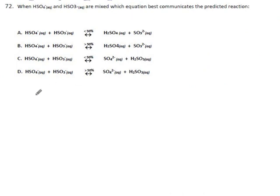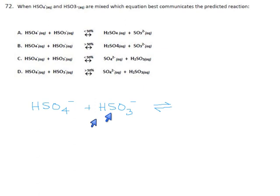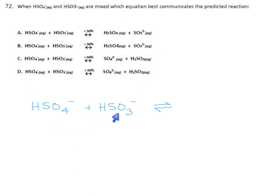HSO4 and HSO3. Both of these are capable of being acids because they both have hydrogen, and both are capable of being bases because they both have a negative charge. You can think of this as either an acid fight or a base fight — I'll normally think of it as an acid fight. HSO4 is saying, here, take one of my hydrogens. HSO3 is saying, no, you take one of my hydrogens. And then they start pushing and shoving.